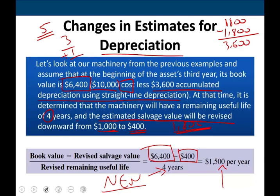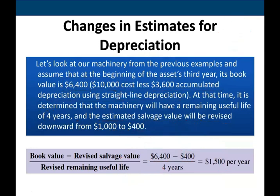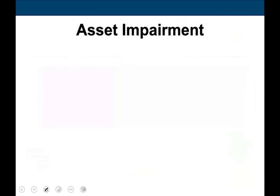A change in estimate is treated prospectively. We don't have to go back to the prior year and change the $1,800 — that's done. One more minor topic: it's a permanent decline in the fair value of an asset, covered in much more detail in intermediate accounting. When we have an asset impairment, what is it?